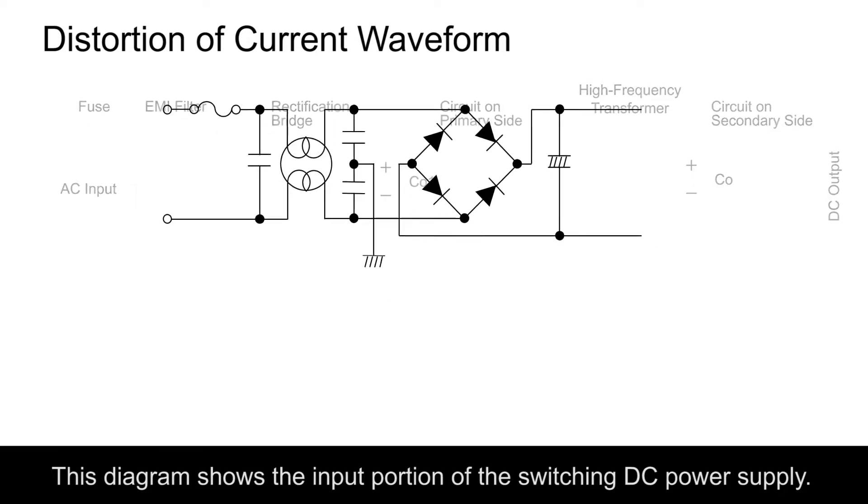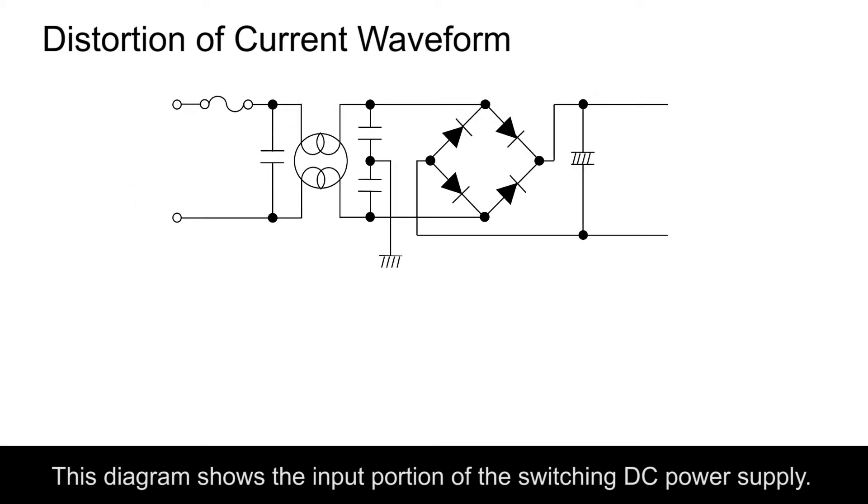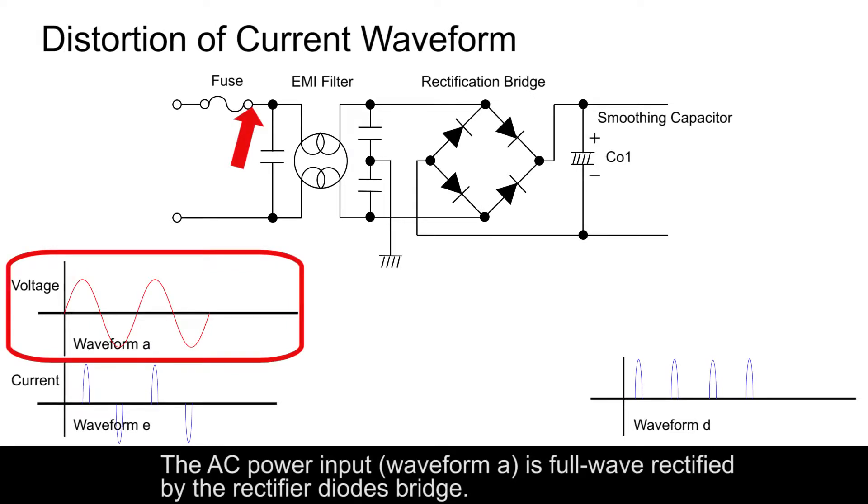This diagram shows the input portion of the switching DC power supply. The AC power input waveform A is full wave rectified by the rectifier diode bridge.